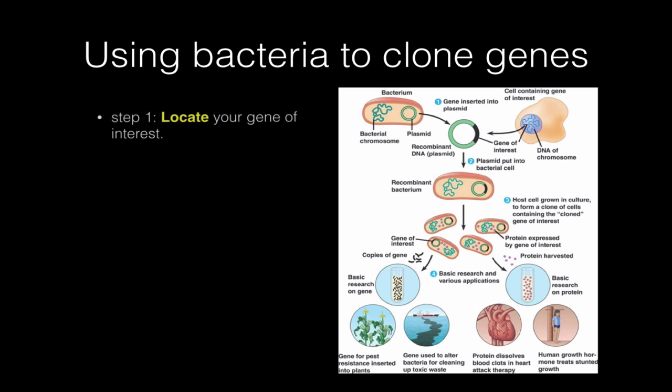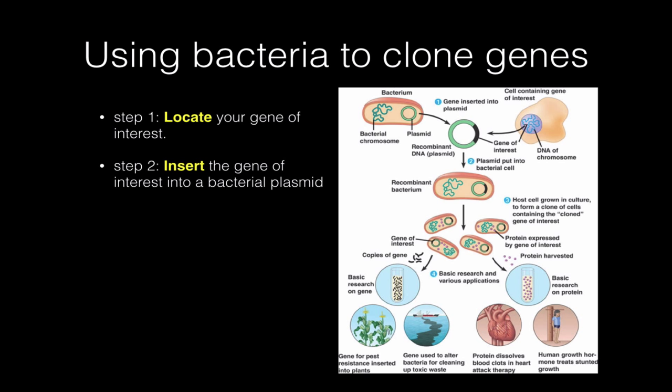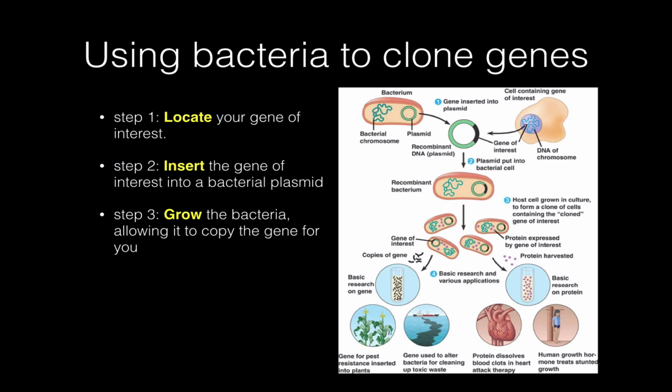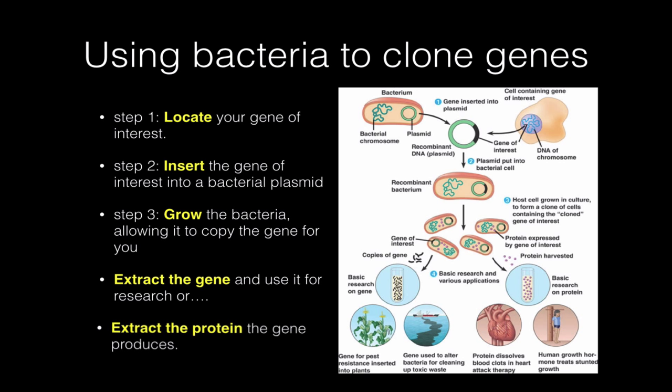Here's the picture from your textbook. Basically what happens is you locate the gene you're interested in — your gene of interest — which could come from something like the Human Genome Project. Then you insert this gene into a vector, in this case a bacterial plasmid. Then you grow bacteria that have taken up this plasmid, and as they reproduce they copy the DNA millions and millions of times. From this you can either extract copies of the gene, or extract a gene product — a protein translated from the gene — such as human growth hormone or clot-buster drugs used in stroke treatment.